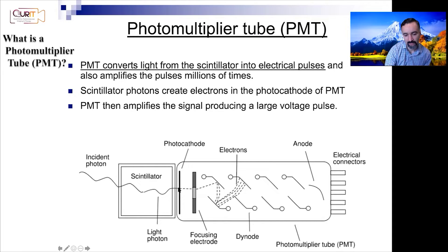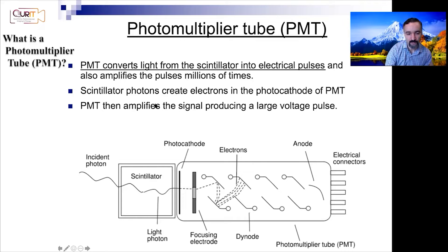As a photon hits the photocathode, an electron is generated. It then starts going through the dynodes. The job of these dynodes is to amplify those electrons into more and more electrons — the signal is amplified at each dynode stage — and finally it is collected at the anode.